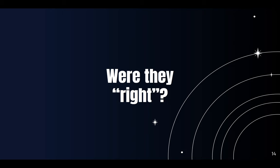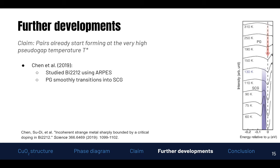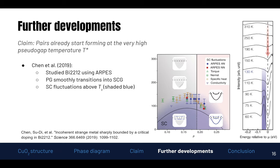But the question remains: were they right, or at least on the right track? Let's look at further developments. A study by Chen and colleagues in 2019, studying bismuth 2212 using angle-resolved photoemission spectroscopy, found that the pseudo-gap smoothly transitions into the superconducting gap, as indicated by the red arrow. They also created a phase diagram where the black line indicates the superconducting dome, and we find superconducting fluctuations far above the critical temperature, indicated with shaded blue — also evidence for preformed pairs.